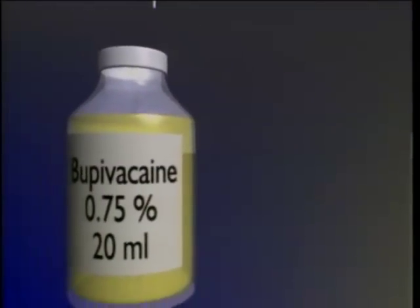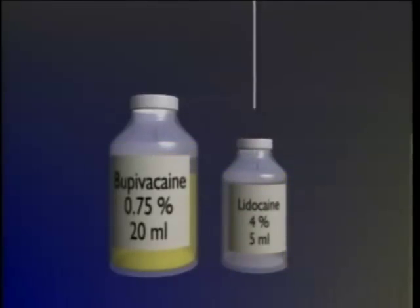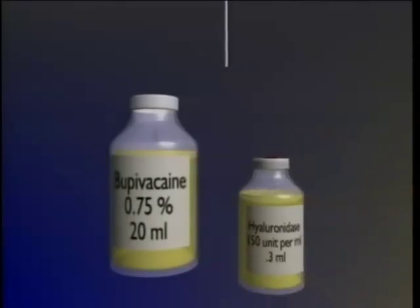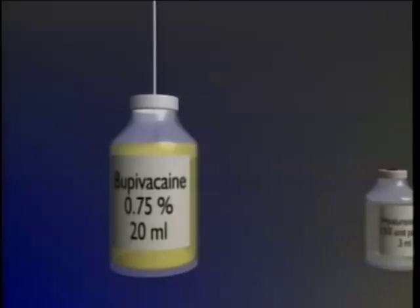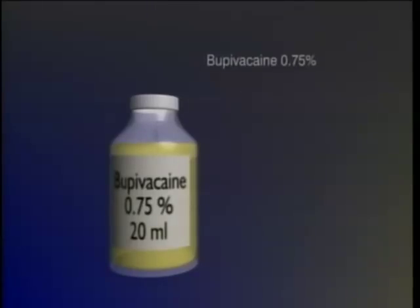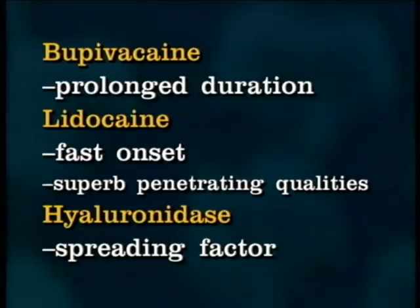Starting with a 20 ml vial of 0.75% bupivacaine, 5 ml is removed and replaced with 5 ml of 4% lidocaine. To the resultant mixture is added 0.3 ml of the 150 unit per ml hyaluronidase. This gives a final concentration of bupivacaine 0.75% at 3 parts, lidocaine 4% at 1 part, with hyaluronidase 2.25 units per ml of the mixture. The bupivacaine provides prolonged duration, the lidocaine provides fast onset and superb penetrating qualities, and the hyaluronidase provides the spreading factor.